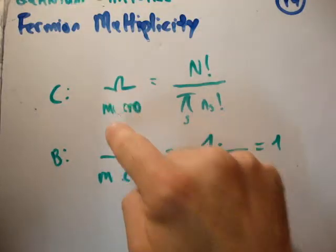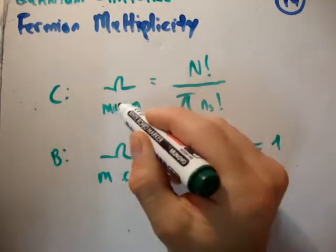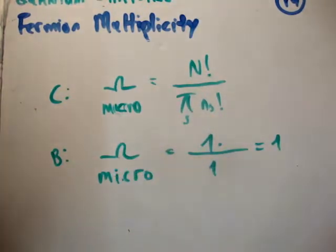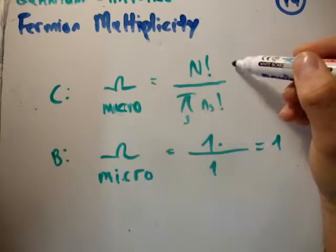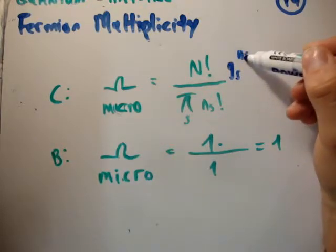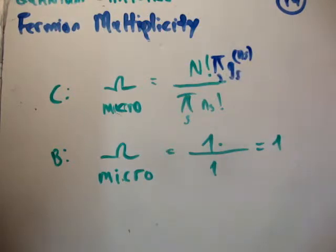So the next thing we had to look at was what is the microscopic description. Well, for classical particles, we found that we had to multiply by a factor of g_s to the power of n_s for every state. And we got that.